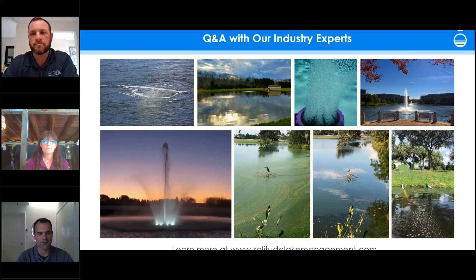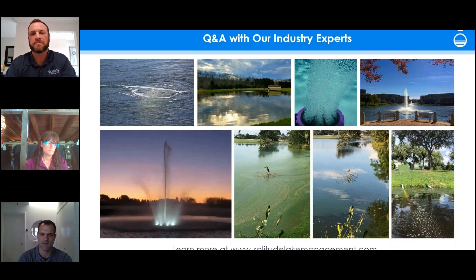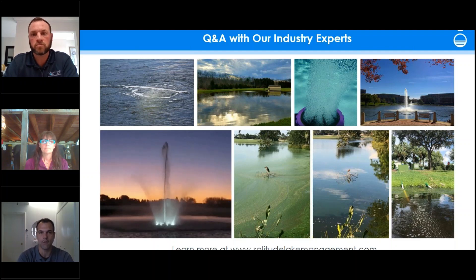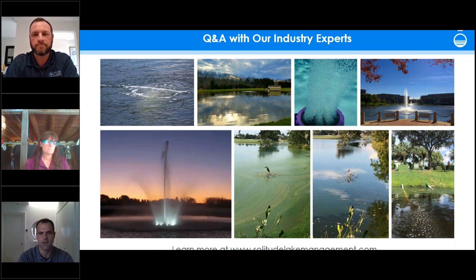Similarly, neither a fountain nor an aeration system will result in super-saturation from natural circulation. It's also important not to under-aerate — if you use too small an aeration system, it can bring poor quality water from the bottom up and mix it with the rest of the water column without adequate circulation to turn over the entire water body frequently enough, which can actually cause more harm than good. In poor water quality conditions or deeper water bodies, we use a staggered startup to avoid problems when first turning on a system.